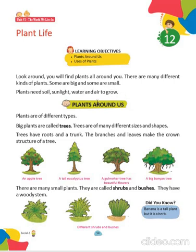Now, plants around us. As we have different plants around us, big plants are known as trees. All trees have different shapes and sizes. They have roots and a trunk. The small plants are known as shrubs or bushes. They have a woody stem. These are small plants, and these are trees.